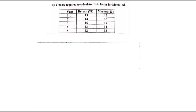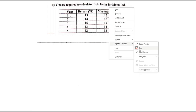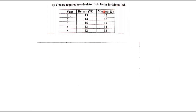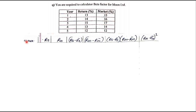The next question is Question 2Q. We are required to calculate the beta factor for Moon Limited. They give us the years, the security return (RS), and the market return (RM). To solve for beta, we need to make a table with columns: year, RS, RM, RS−RS̄, RM−RM̄, (RS−RS̄)×(RM−RM̄), and (RM−RM̄)².